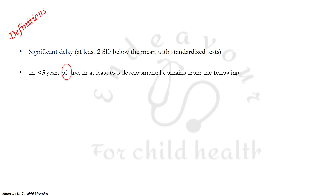For developmental delay you calculate developmental quotient (DQ) or social quotient (SQ), whereas for children more than 5 years of age, i.e. for intellectual disability, you calculate intellectual quotient (IQ).